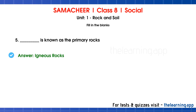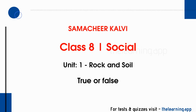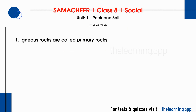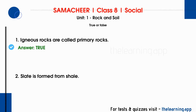Fifth question: Dash is known as the primary rocks. Correct answer is igneous rocks. Igneous rocks are formed from magma in the middle of the earth's surface. Igneous rocks are called primary rocks and are the hardest rocks.